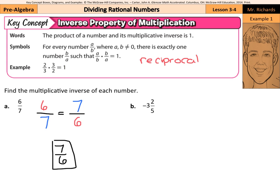What about negative 3 and 2/5? We need to first turn this into an improper fraction. So 3 times 5 is 15 plus 2 is 17 over 5. And now this is a negative 17/5. And so the reciprocal of a negative 17/5 is a negative 5/17. So negative 5/17 is the multiplicative inverse of negative 3 and 2/5.